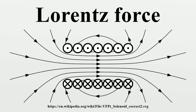EMF: The magnetic force component of the Lorentz force is responsible for motional electromotive force, the phenomenon underlying many electrical generators. When a conductor is moved through a magnetic field, the magnetic force tries to push electrons through the wire, and this creates the EMF. The term motional EMF is applied to this phenomenon, since the EMF is due to the motion of the wire. In other electrical generators, the magnets move while the conductors do not. In this case, the EMF is due to the electric force term in the Lorentz force equation. Both of these EMFs, despite their different origins, can be described by the same equation — namely, the EMF is the rate of change of magnetic flux through the wire. Einstein's special theory of relativity was partially motivated by the desire to better understand this link between the two effects.